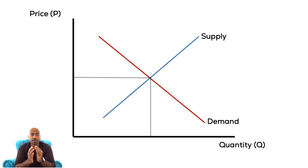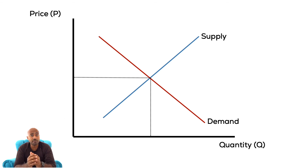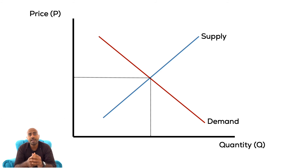We can represent this market using the competitive market model. On the y-axis we have interest rates, and the quantity of funds is on the x-axis. Savings is represented by the supply curve — the law of supply holds here, as interest rates increase, savers respond by increasing the quantity supplied of funds. Borrowers are demanders of funds and have an inverse relationship between interest rates and quantity of loans demanded.